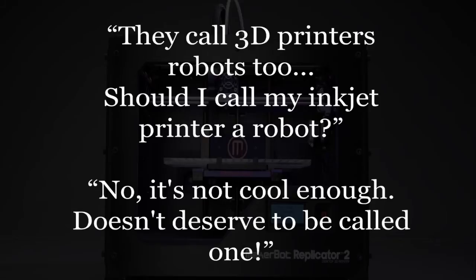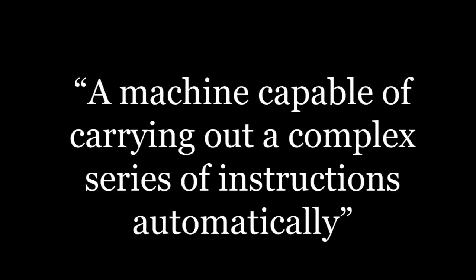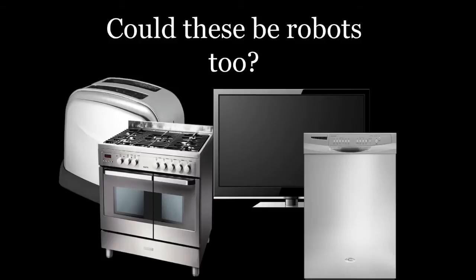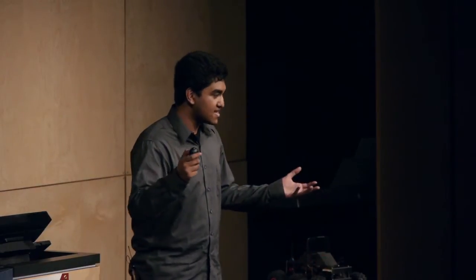A good friend posted on Facebook: 'They call 3D printers robots too — should I call my inkjet printer a robot?' The actual definition of a robot is: a machine capable of carrying out a complex series of instructions automatically. So could your toaster be a robot? It carries out a complex series of actions — you put toast in and after a certain time it pops up. What about your TV, your oven, your dishwasher? In a sense, they're all robots, but much like living organisms, they vary in complexity.